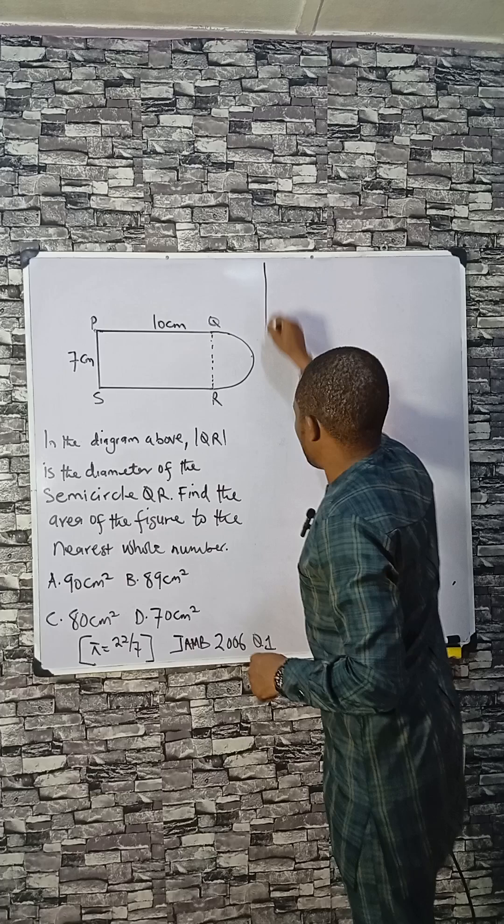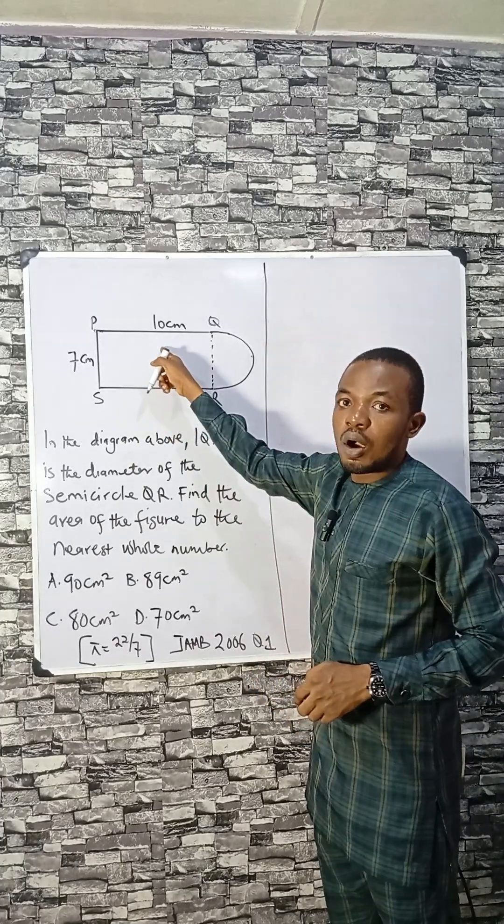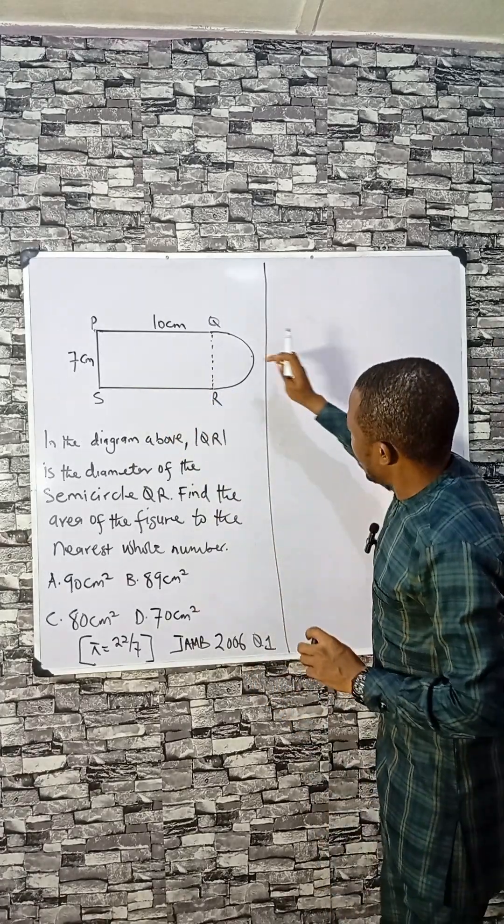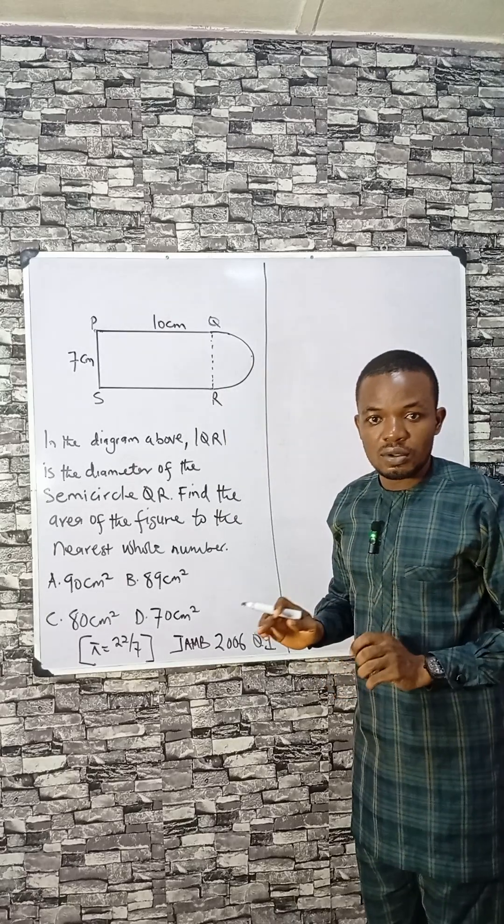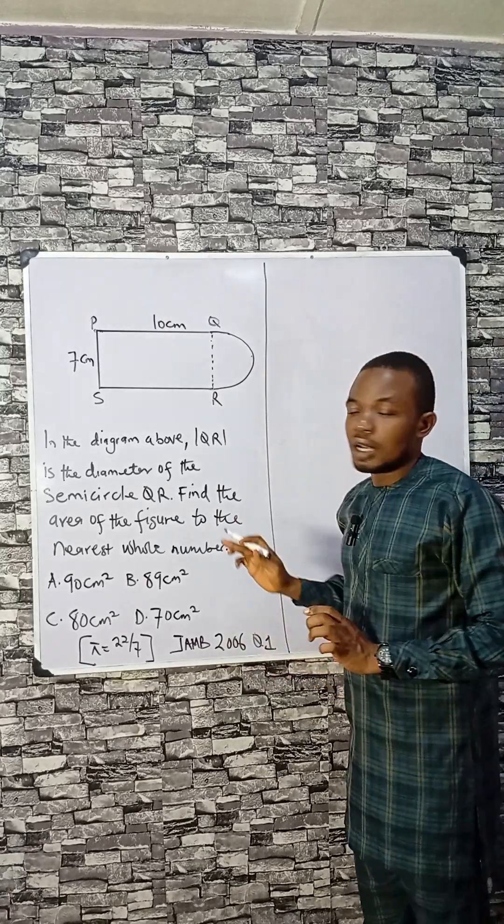The first thing you need to do is find the area of the rectangle, then add the area of the semicircle. That is the answer.